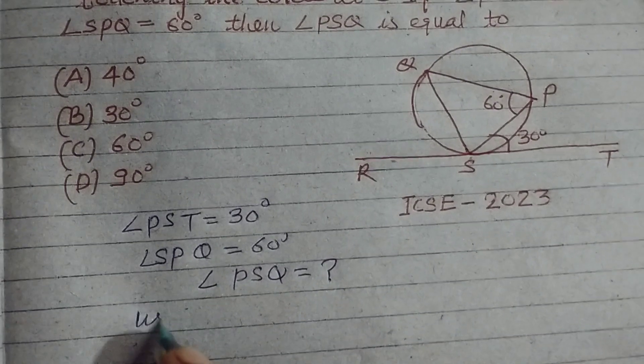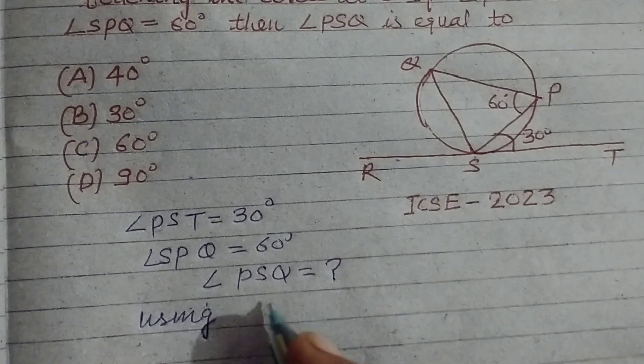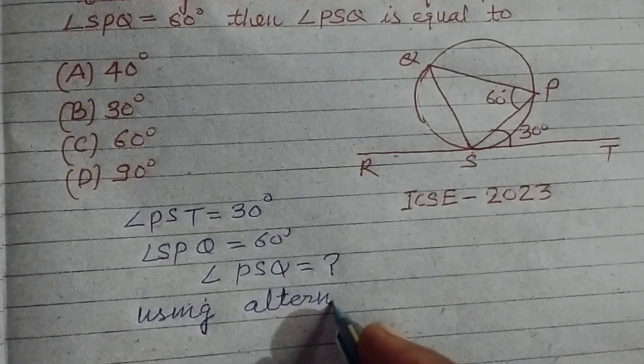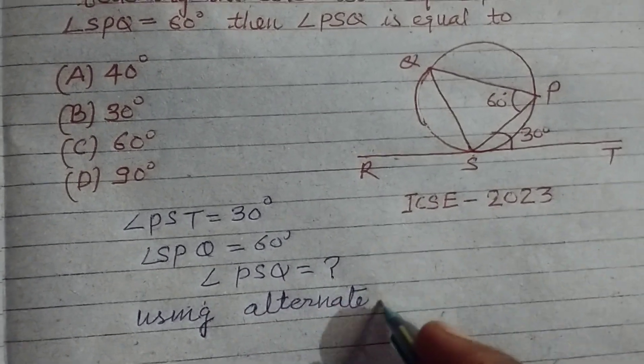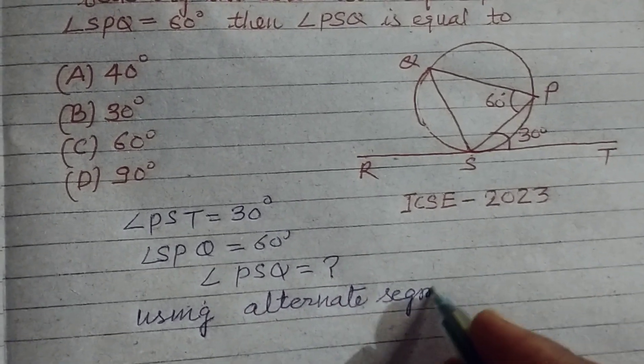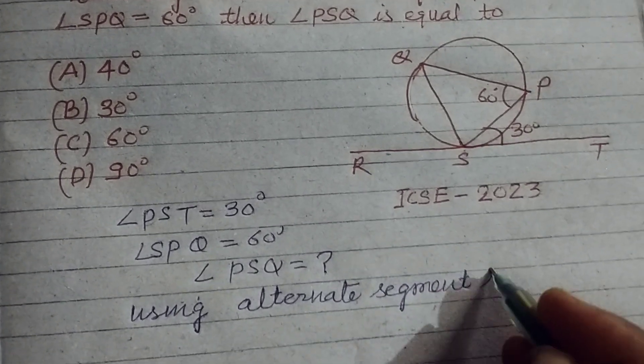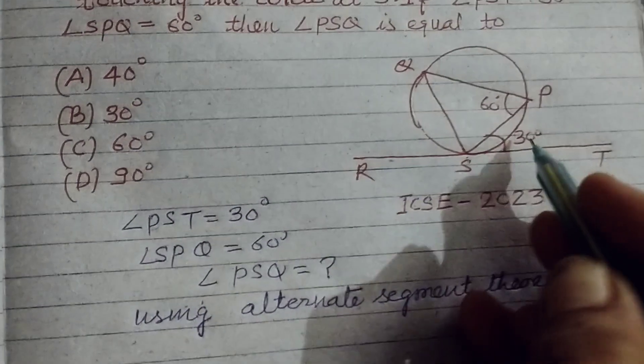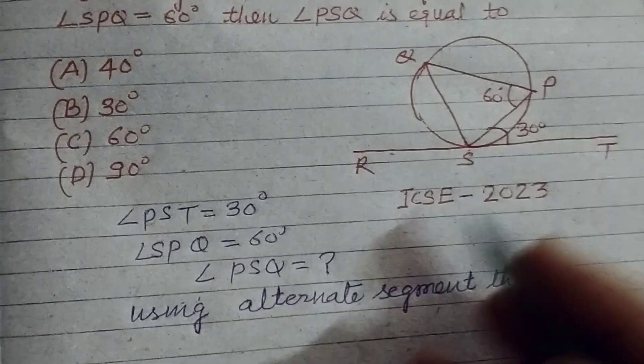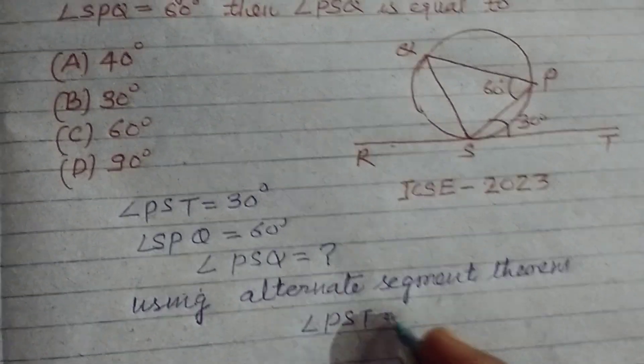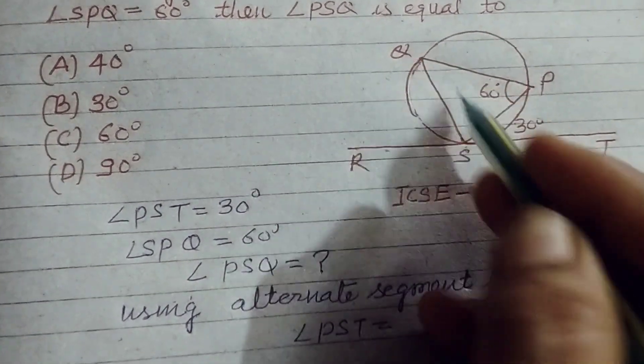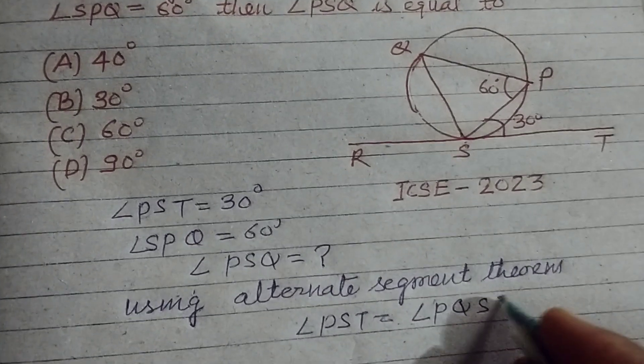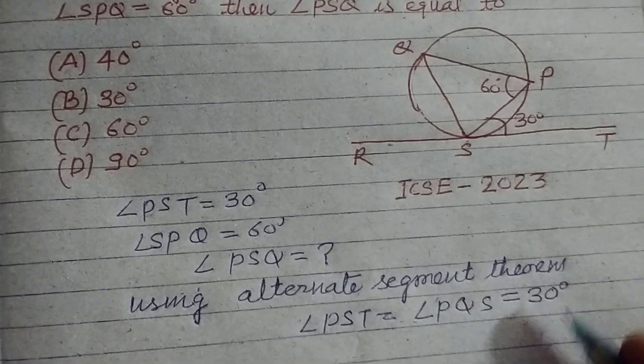Using alternate segment theorem, this angle PST is equal to angle PQS. So this is equal to 30 degrees.